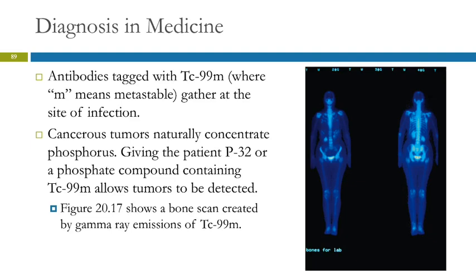Cancerous tumors naturally concentrate phosphorus, so you can administer P-32 or a phosphate-containing compound that has technetium-99M, and you can see where the tumors are. This figure shows a bone scan created using the gamma ray emissions of technetium-99M, where the bright spots show where the radio tag is being concentrated.